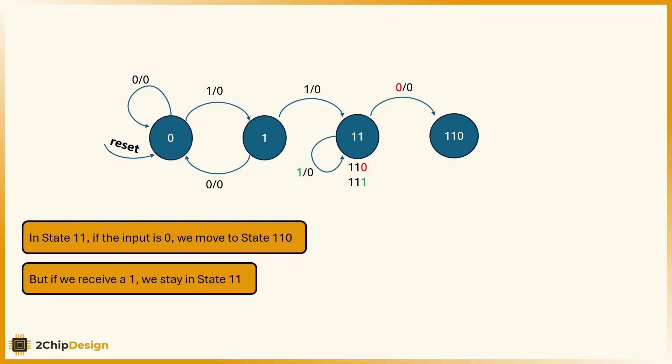In state 11, if the input is 0, we move to state 110. But if we receive a 1, we stay in state 11.